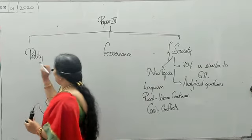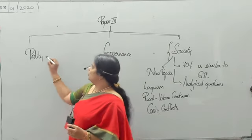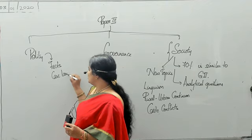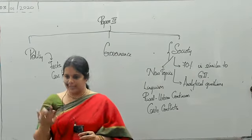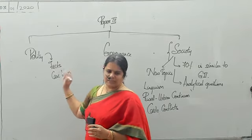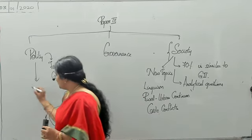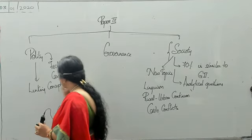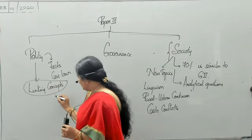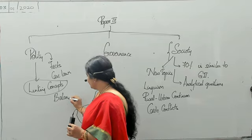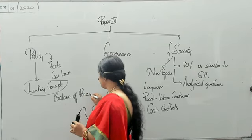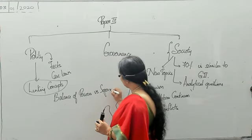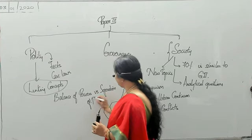Now, moving on to polity. Polity, the subject as such for you in Group 2 was more about facts, was more about knowing the case laws. You remember in your Group 2 also there were nearly 10 questions only on case laws. So it was more about facts, case laws and direct questions. Here it is about linking concepts. This is going to be totally analytical. For example, questions like: we talk about balance of powers in Indian constitution. How do we say that there is a balance of powers? And why not separation of powers?